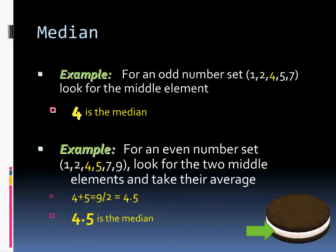Median for an odd set of numbers is very simple: arrange the numbers and look at the middle. Here, 4 is the median of a set of 5 numbers. What happens when there's an even set of numbers? You take the two middle numbers, add them together, and find the mean — the average. In that case, it would be 4.5.